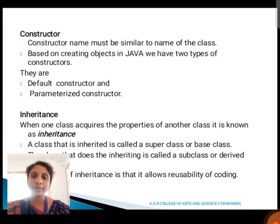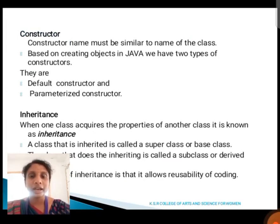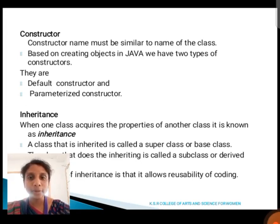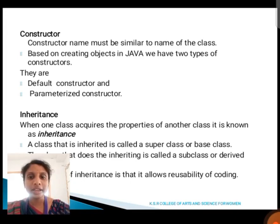Next, we are going to see about constructor and its types. A constructor name should be the same as the name of the class. It is divided into two types: default constructor and parameterized constructor. Inheritance — when one class acquires the properties of another class, it is known as inheritance. The class that is inherited is called a superclass or base class. The class that inherits is called a subclass or derived class. Inheritance allows reusability of code.